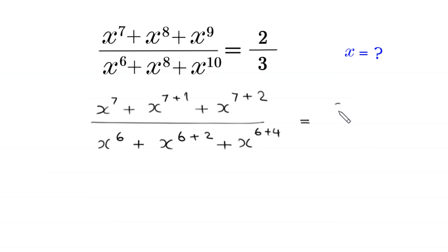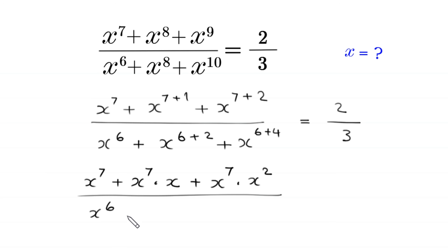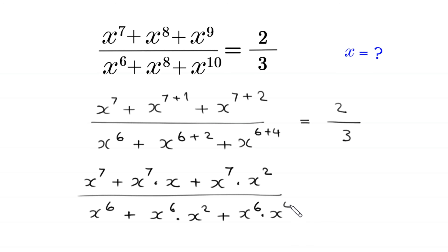Next, x to the power 7 plus 1 becomes x to the power 7 times x, and x to the power 7 plus 2 becomes x to the power 7 times x squared. In the denominator, x to the power 6 plus 4 becomes x to the power 6 times x to the power 4. This is all equal to 2 over 3.